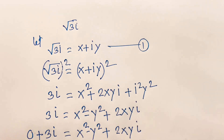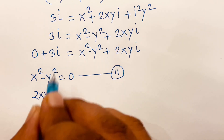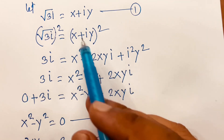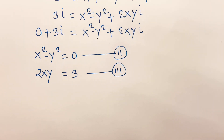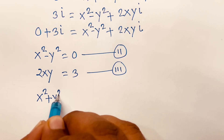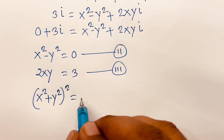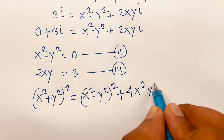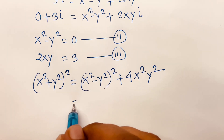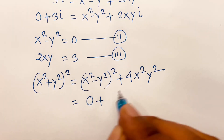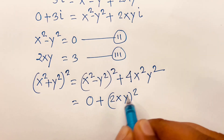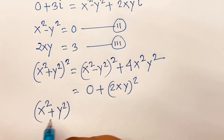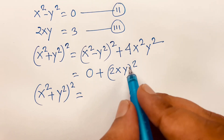Now if I compare the real part and imaginary part: x squared minus y squared equals 0, which is our second equation. Our first equation is 2xy equals 3. We need the values of x and y. We know x squared minus y squared equals 0. Now we find the value of x squared plus y squared. We know that (x squared plus y squared) squared equals (x squared minus y squared) squared plus 4x squared y squared, where a is x squared and b is y squared.